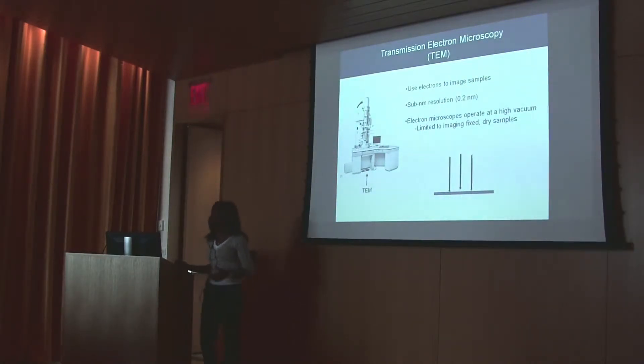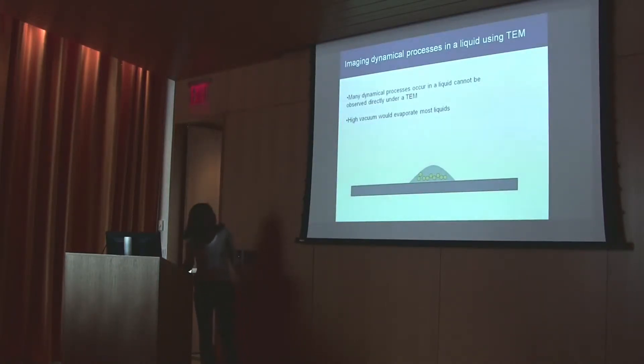Because these electron microscopes operate under a high vacuum, they are typically limited to imaging fixed dry samples. If we wanted to image a dynamical process that occurred in a liquid, we would be unable to do this directly using the TEM, because most liquids exposed to the environment of the TEM will quickly evaporate.